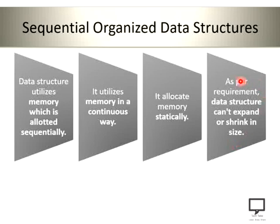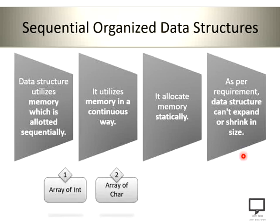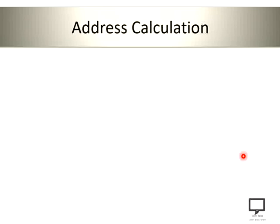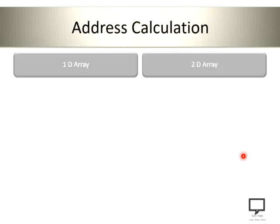This is a big disadvantage. Examples of sequential organized data structures are array of integer, array of character, array of float, array of structure, and so on. Basically, an array is an example of a sequential organized data structure which allocates memory continuously. It is also a static data structure. Now let's move to the heart of this video session, which is address calculation.